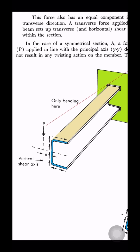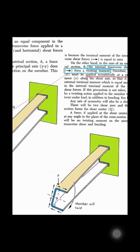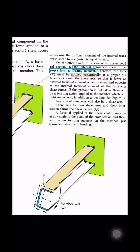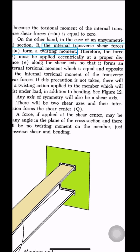But on the other hand, in case of the unsymmetrical section, the internal transverse shear forces form a twisting moment. Therefore, the force must be applied eccentrically at a proper distance along the shear axis, so that it forms an external torsional moment which is equal and opposite to the internal torsional moment of that transverse shear force.